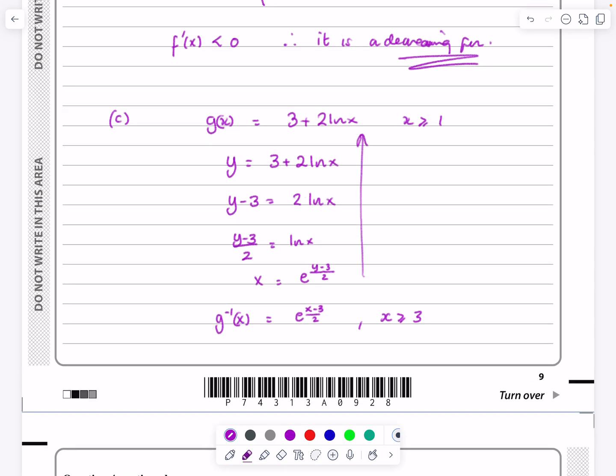The range of this function, remember we've got x greater than or equal to 1, so we're going to get gx is equal to 3 plus, well if it was 2 log 1, 2 log 1 is 0, so we get gx is equal to 3, so it's going to be greater than or equal to 3. I've rushed that a little bit, but, you know, we've got lots of other stuff to do here.